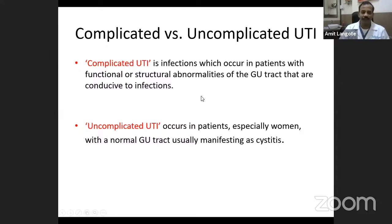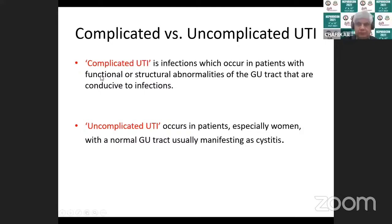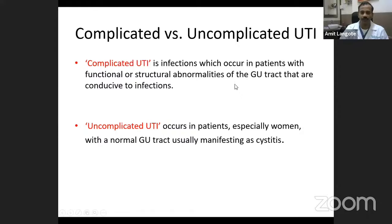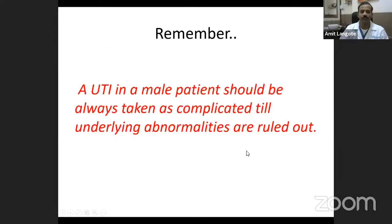Despite those defenses, we do get infections, and infections in the urinary tract are either complicated or uncomplicated. Complicated UTI is infection which occurs in patients with an obstruction or abnormality in the genitourinary tract — either functional or structural — that predisposes to infection. Uncomplicated UTI occurs in patients, especially women, where the genitourinary tract is normal, and the most common infection in that category is cystitis, or infection of the urinary bladder.